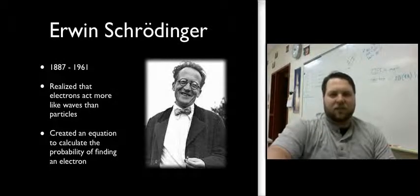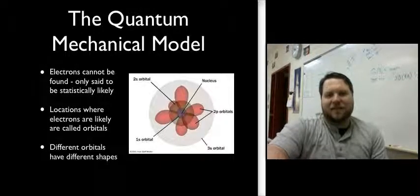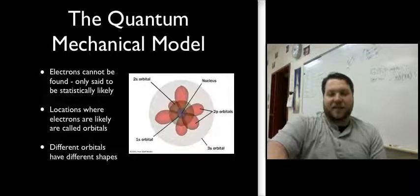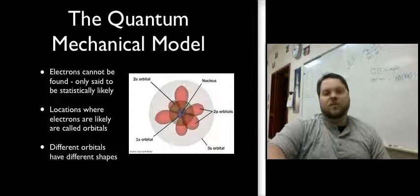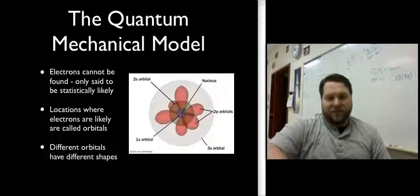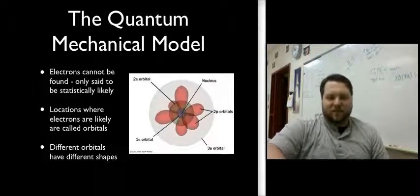And this new model of the atom was called the quantum mechanical model. And in this model, the big difference is that rather than saying we can know exactly where an electron is, because it's like this little marble circling the nucleus, we say that we can never know exactly where an electron is. We can only calculate the probability of it being in a certain place. And we call those places orbitals.